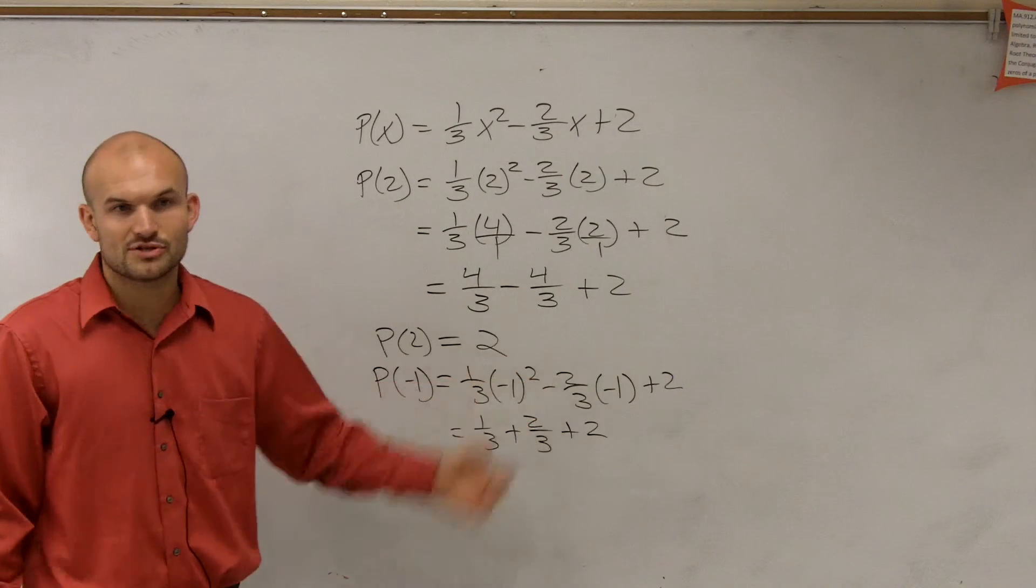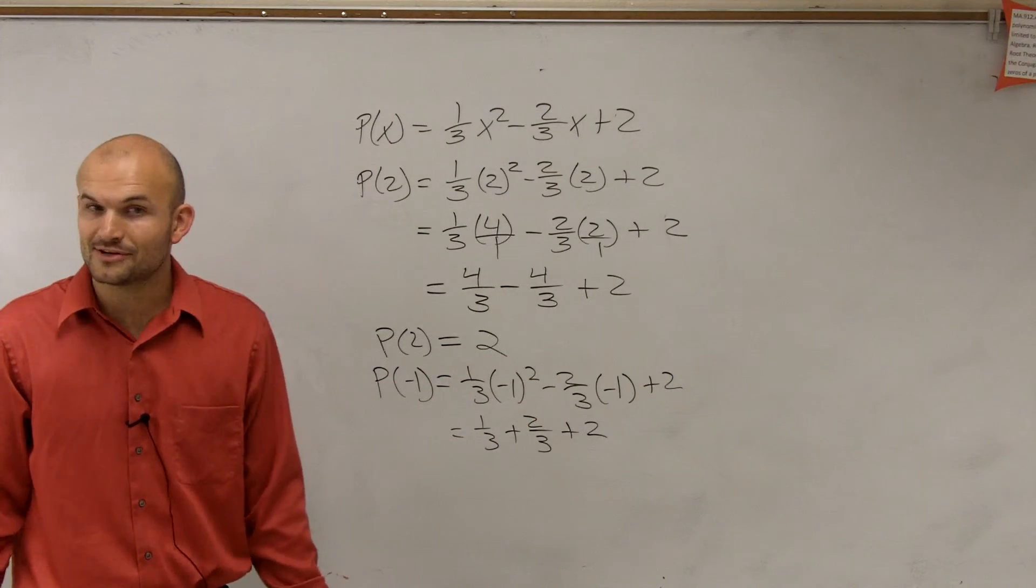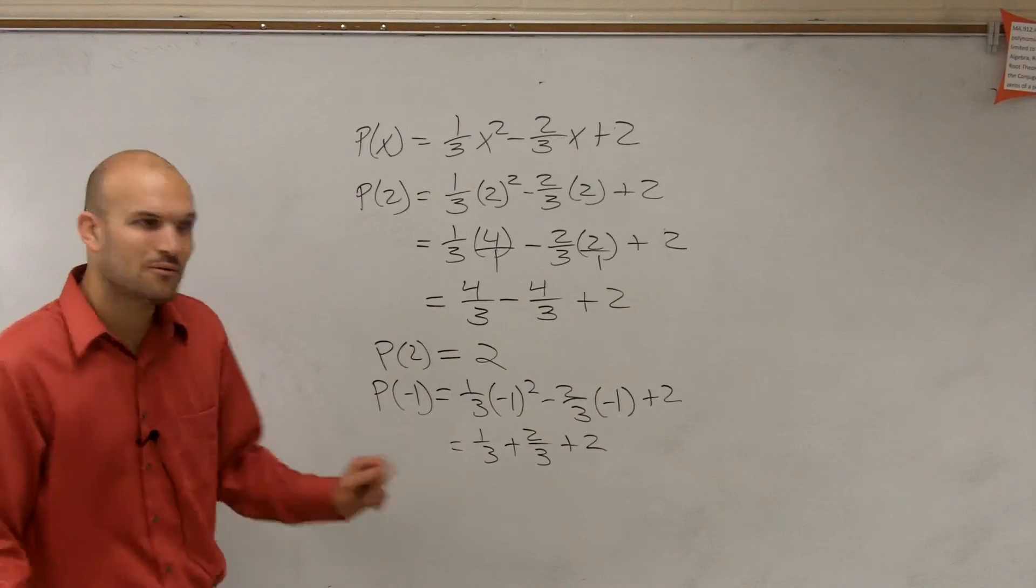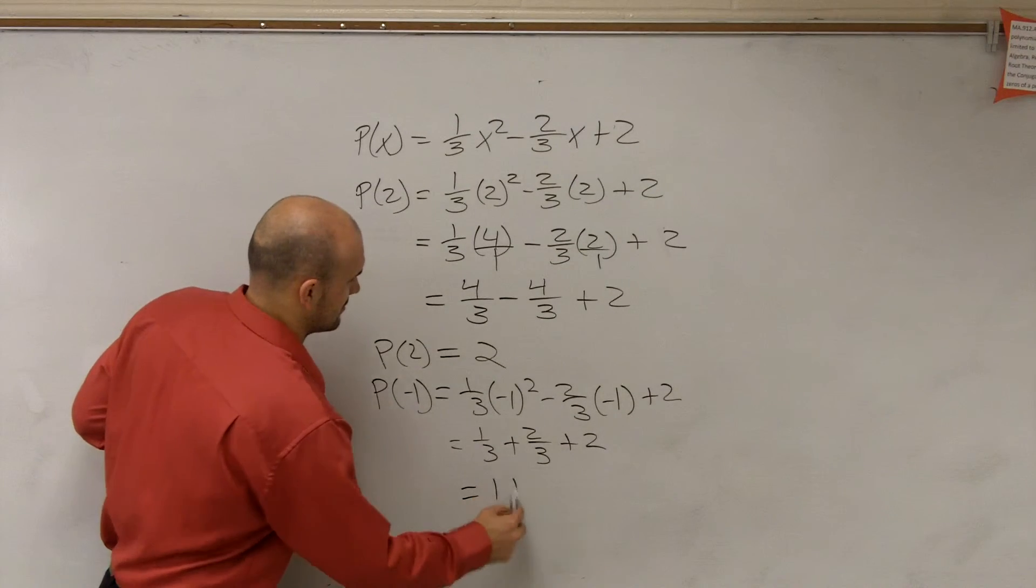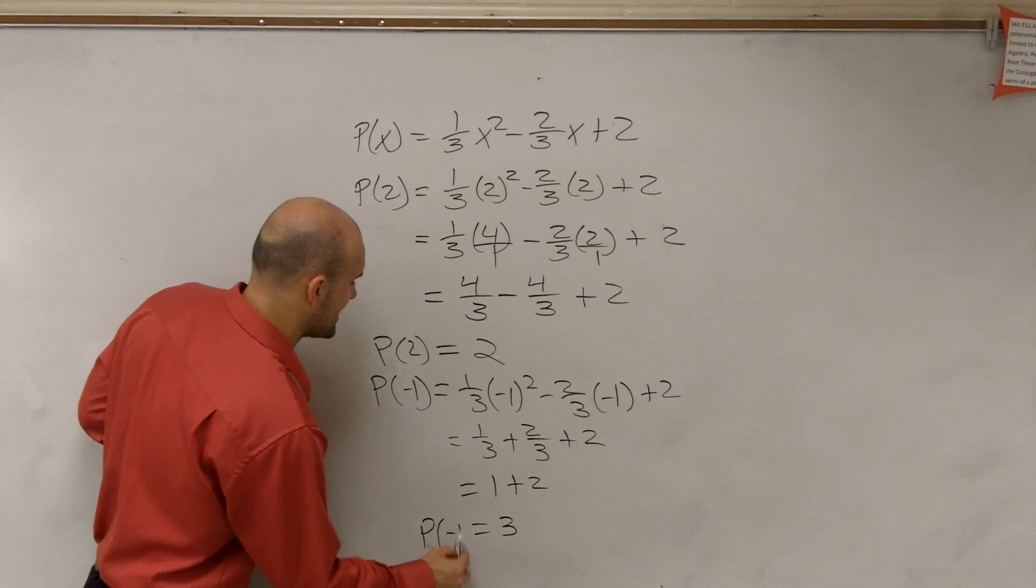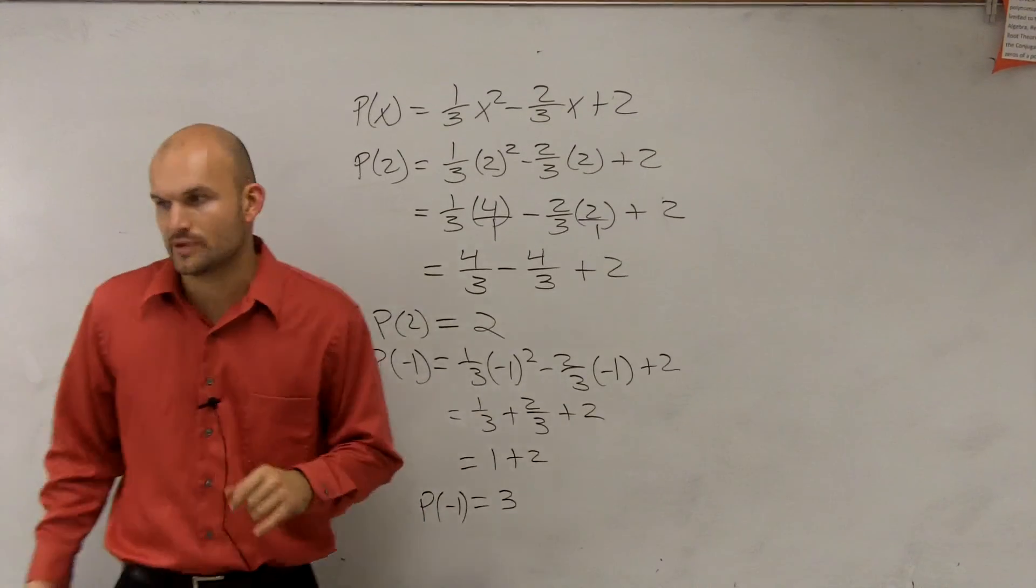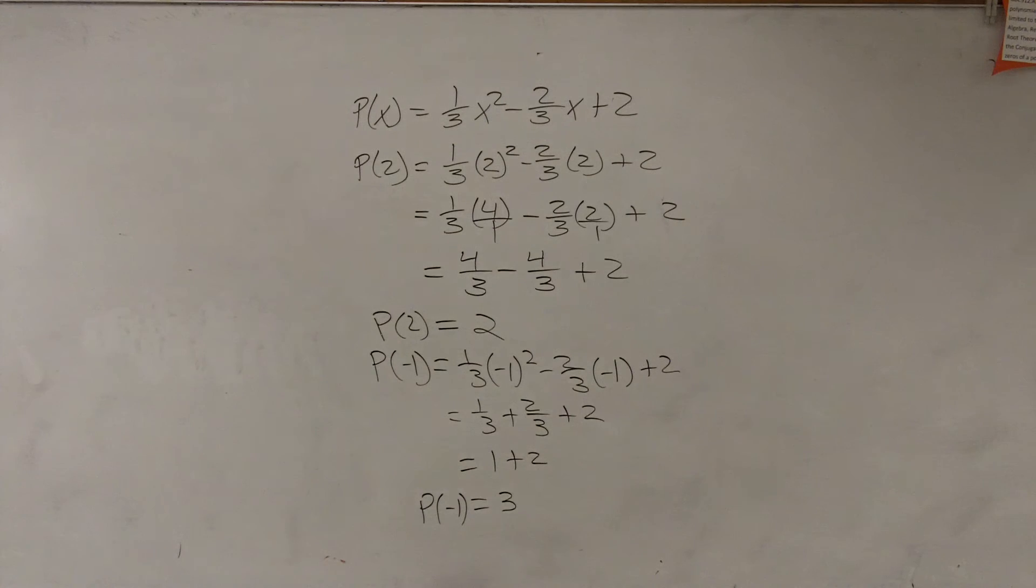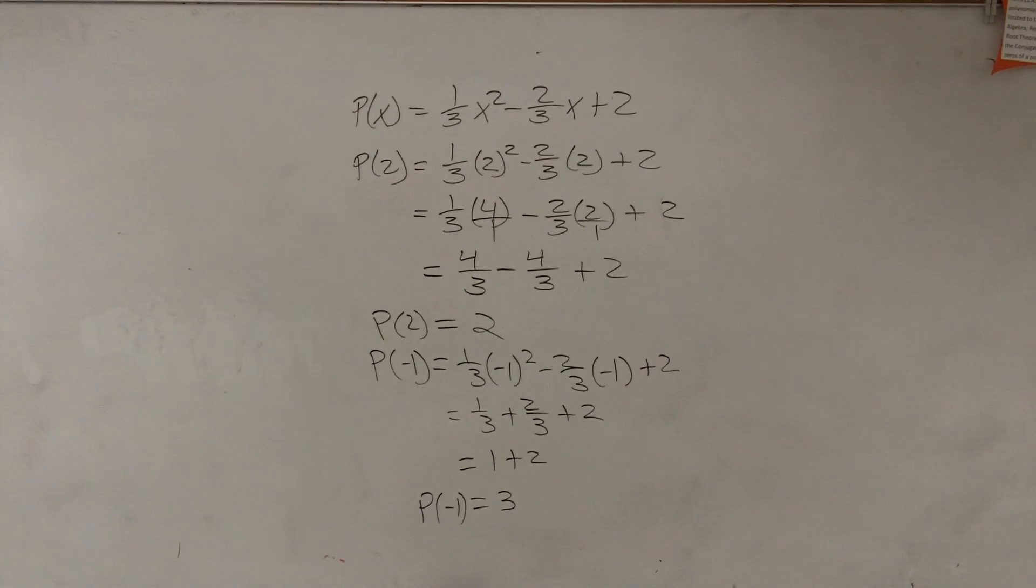Right? 1/3 plus 2/3 equals 3/3. 3/3 is really 1. So the value of p at negative 1 is equal to 3, OK? Those are not very difficult.